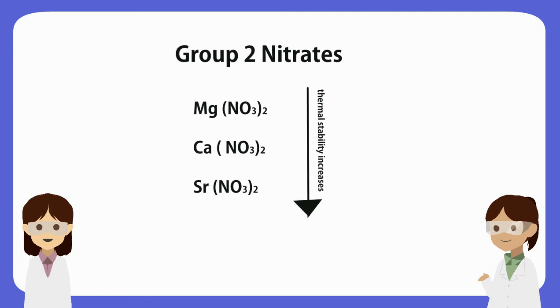In other words, as we go down the group, the nitrates become more thermally stable. In conclusion, going down Group 2, the element becomes more stable to heat, thus requiring more heat energy to decompose.